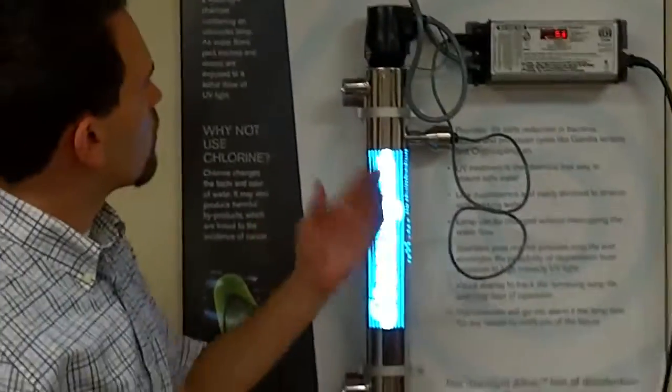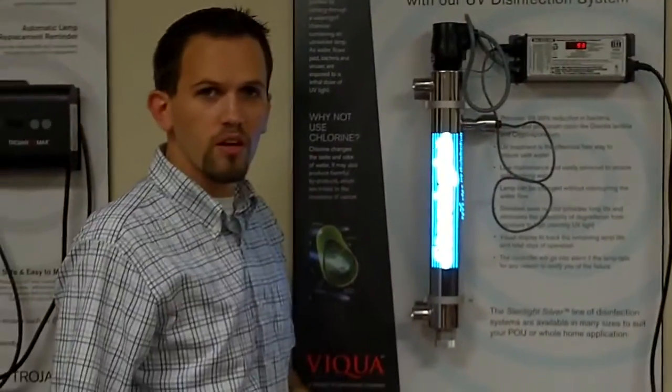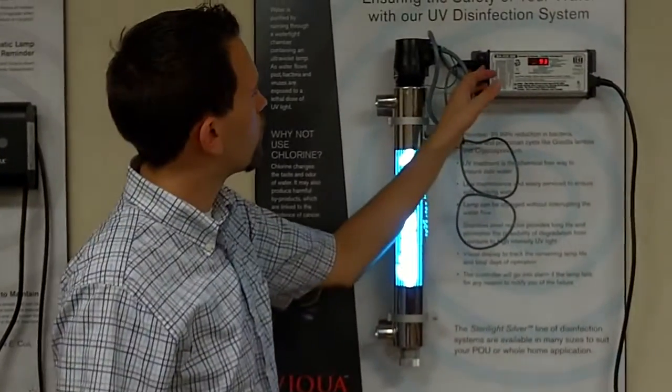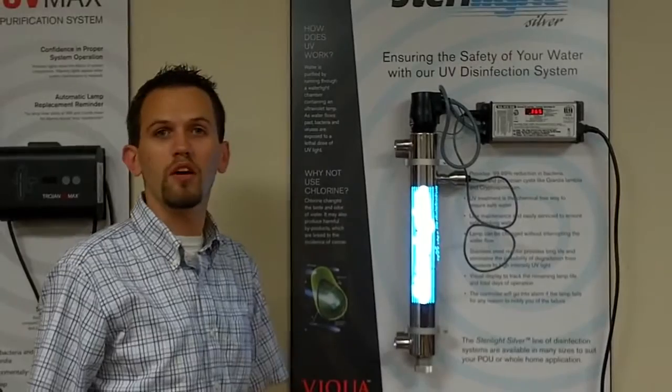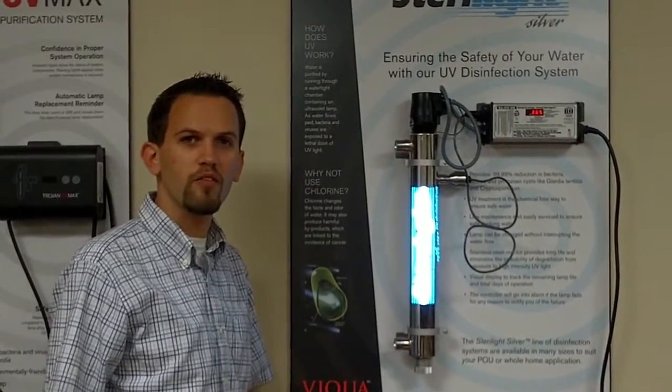And you'll see it goes back to the intensity display if you have a monitored system. Or if you do not have a monitored system, it will show you 365, which tells you that's how long you have left in the life of your bulb.